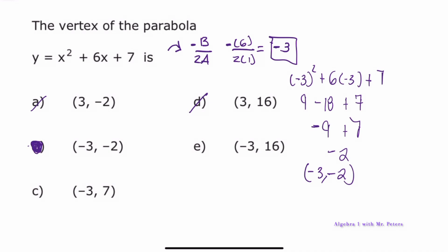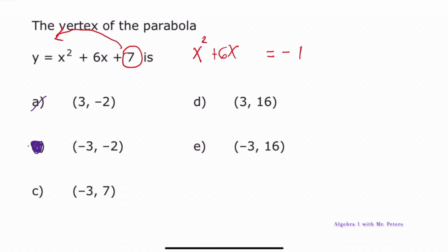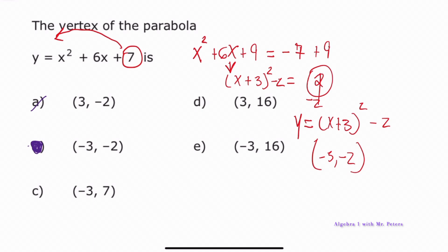Another way to find the vertex is completing the square. Move 7 to the other side: x² + 6x = −7. Take half of 6 and square it: (3)² = 9; add 9 to both sides. The trinomial factors to (x + 3)², giving (x + 3)² = 2. Bringing 2 to the other side: y = (x + 3)² − 2. From vertex form, we confirm the vertex is at (−3, −2). Both methods — −b/(2a) and completing the square — give the same result.